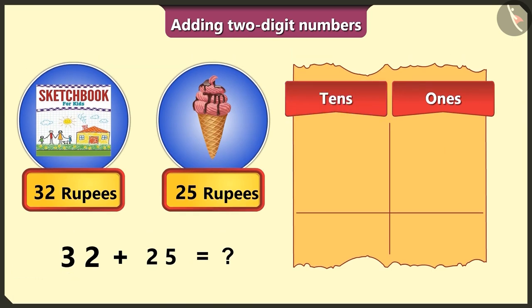Okay. From thirty-two, we write three in the ten's box and two in the ones box.